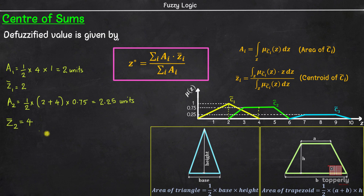In similar fashion, the area of trapezoid C3 can be written as A3 equal to 0.75 units and centroid Z-bar_3 is equal to 8.